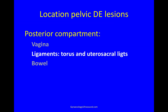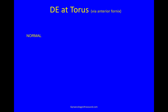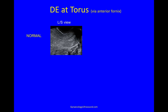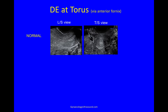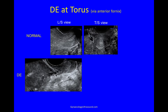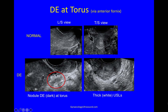Next, I look at the ligaments — the torus and utero-sacral ligaments. We saw already what normal ligaments look like. And this is thick, fibrotic utero-sacral ligaments behind the cervix, with a nodule of deep endometriosis in it. And on the transverse plane, you can clearly see thick, fibrotic utero-sacral ligaments.